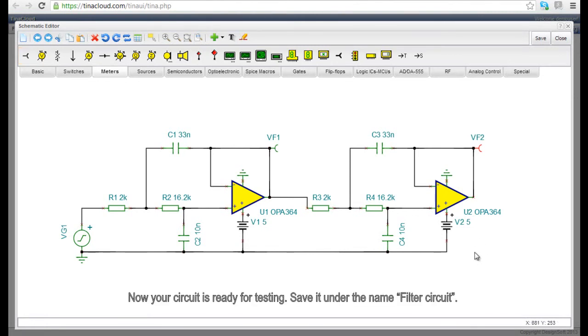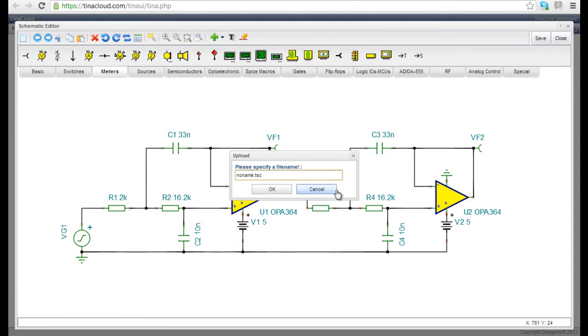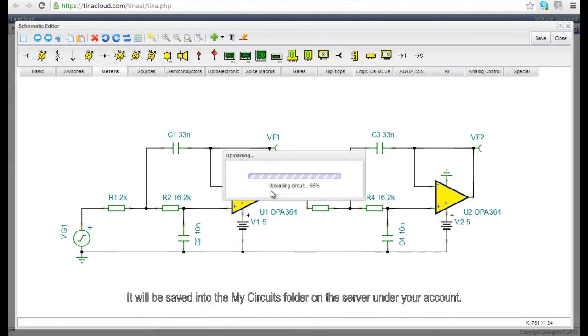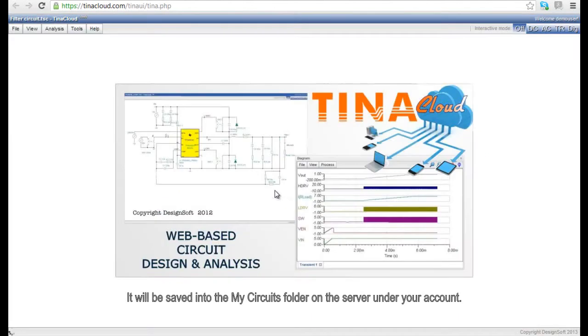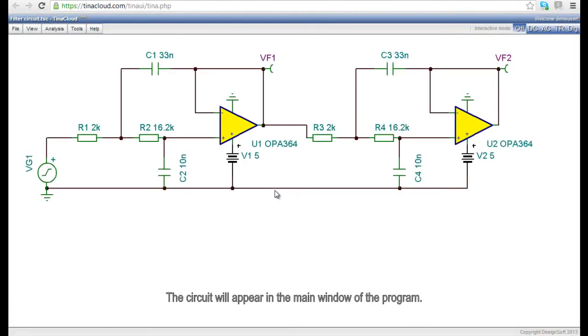Now your circuit is ready for testing. Save it under the name Filter Circuit. It will be saved into the My Circuits folder on the server under your account. The circuit will appear in the main window of the program.